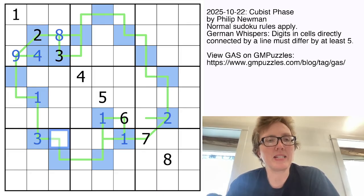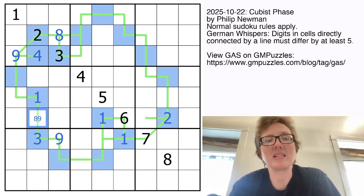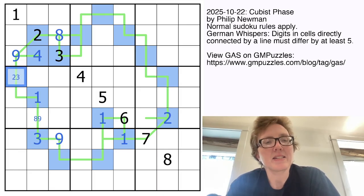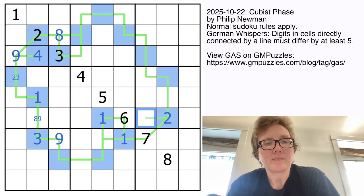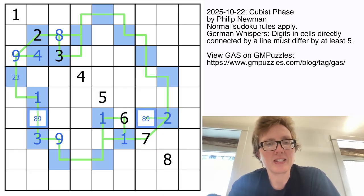We know these can only be 8 or 9, and there's already an 8 in this column, so that's going to be a 9. This could still be either 8 or 9. This is going to be 2 or 3, because it sees a 1 and a 4. This is going to be 8 or 9, because it sees a 6 and a 7. Interestingly, that gives us a little 8-9 pair here.